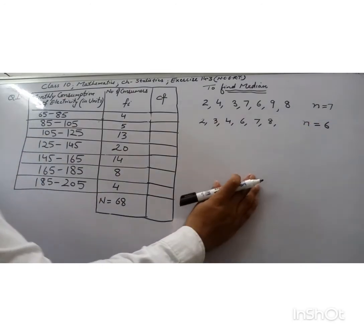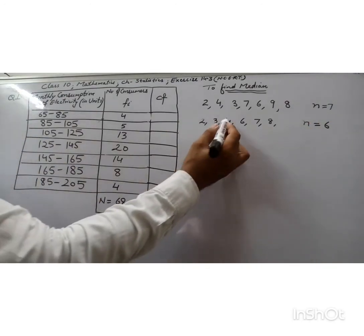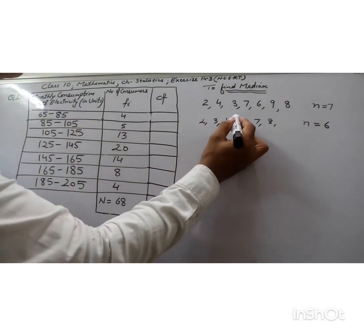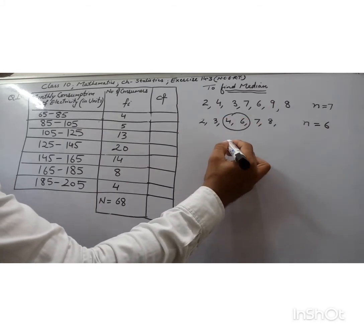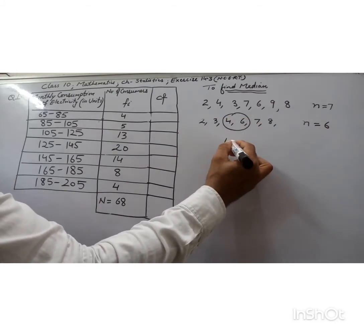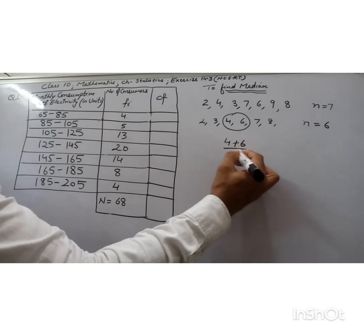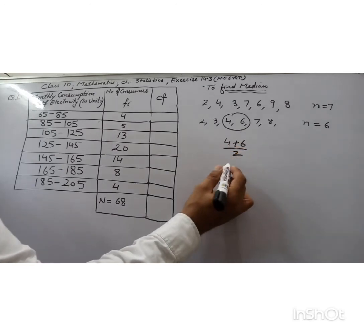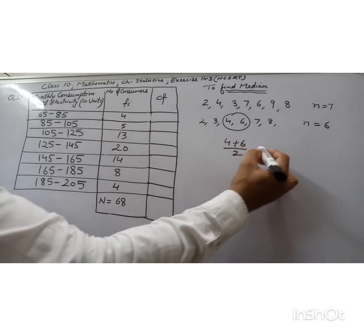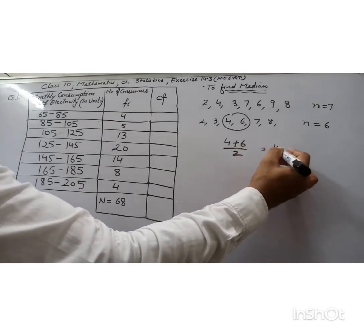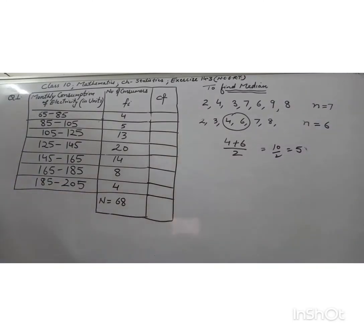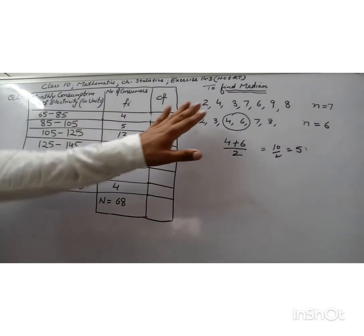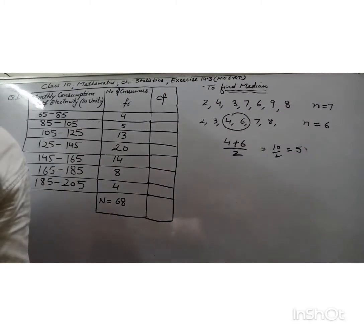Now suppose the number of students is 6 instead of 7. With 6 observations there is no single middlemost term — there are two middlemost terms. In this case, the median will be the average of these two middle terms: the sum of the two terms divided by 2. So that gives us a median of 5.